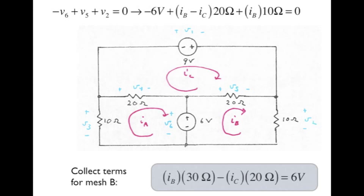Collecting terms and simplifying, we can now write I sub B times 30 ohms minus I sub C times 20 ohms equals 6 volts. That's KVL for mesh B. In terms of pattern recognition, I sub B is multiplied by the sum of the resistance in mesh B. I sub C is multiplied by minus the resistance shared by meshes B and C. That 6 volts on the right-hand side is from the voltage source, with the sign taking into account that we've moved it to the other side of the equation.